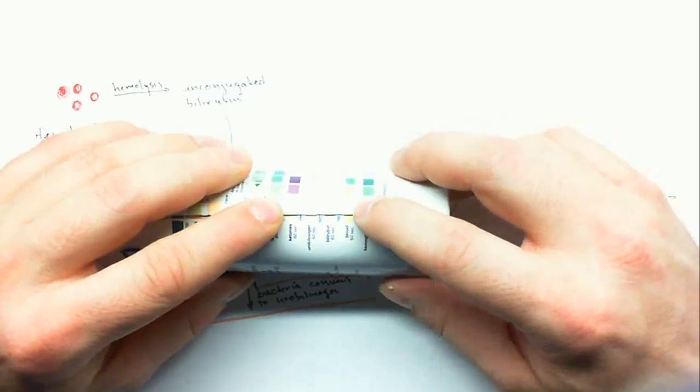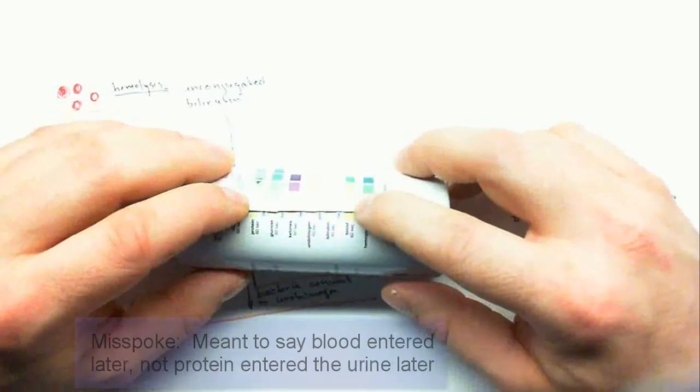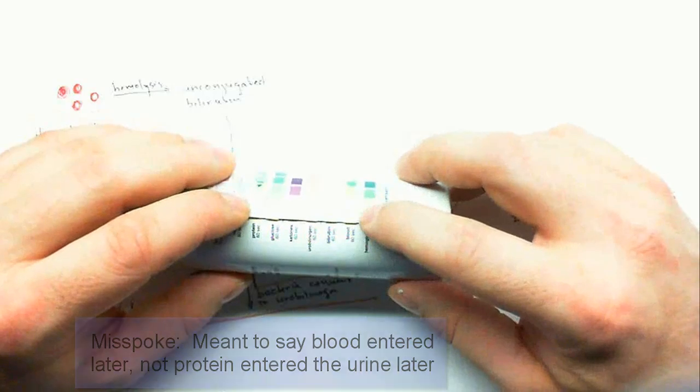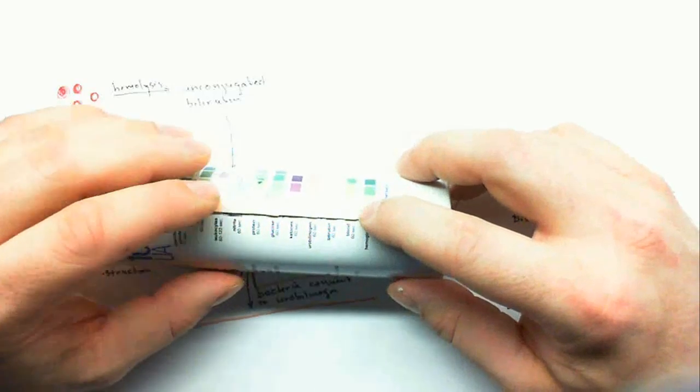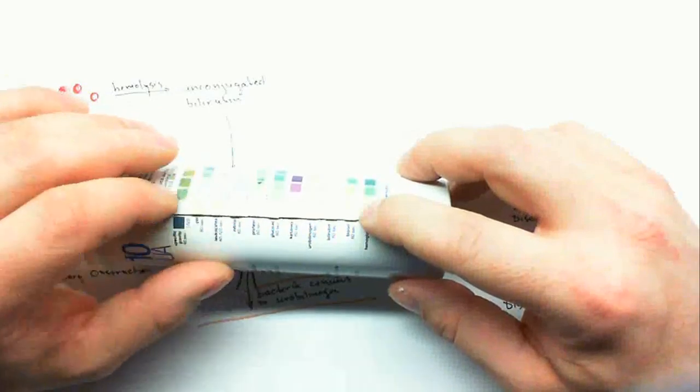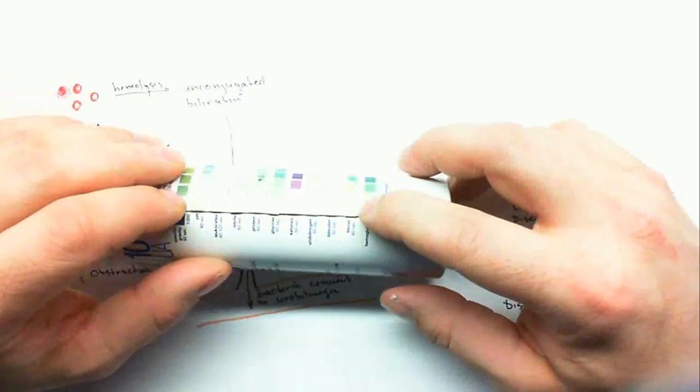So if there is blood in the urine but there's not protein, it probably means that blood entered later, especially if this could indicate UTI. Especially if there's high nitrates and maybe a basic pH also to indicate, or leukocytes also to indicate a urinary tract infection.